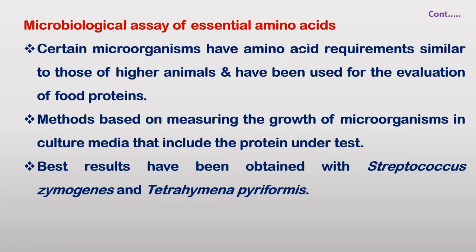Next is the microbiological assay of essential amino acids. We can assess essential amino acids using microorganisms — certain microorganisms which have specific amino acid requirements have been used for evaluating food protein quality. The method is based on measuring the growth of microorganisms in culture media that includes the protein under test. The best results have been obtained with Streptococcus zymogenes and Tetrahymena pyriformis.